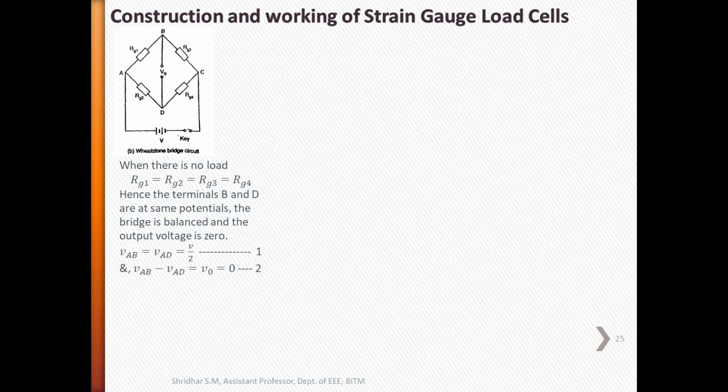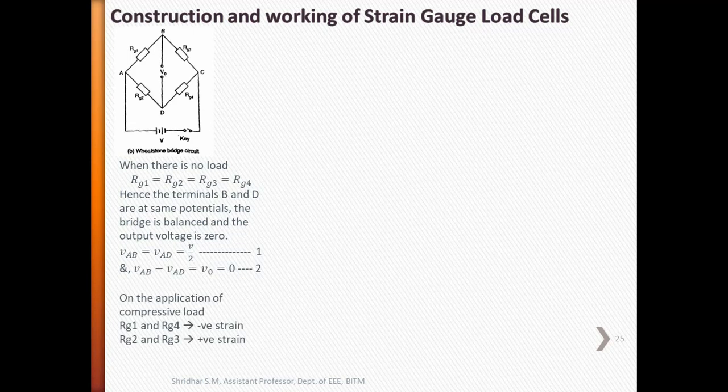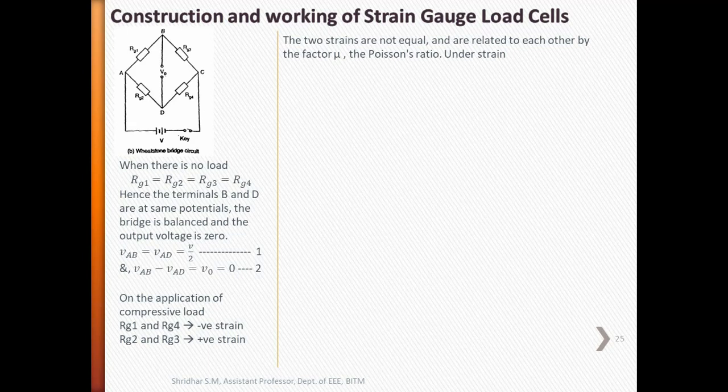Now, on the application of compressive load to the unit, the vertical gauges RG1 and RG4 undergo compression, that is negative strain, and there is a decrease in resistance. The circumferential gauges RG2 and RG3 simultaneously undergo tension, that is positive strain, leading to increase in the resistance. The two strains are not equal. These are related to each other by the factor mu, which is the Poisson's ratio under strain.